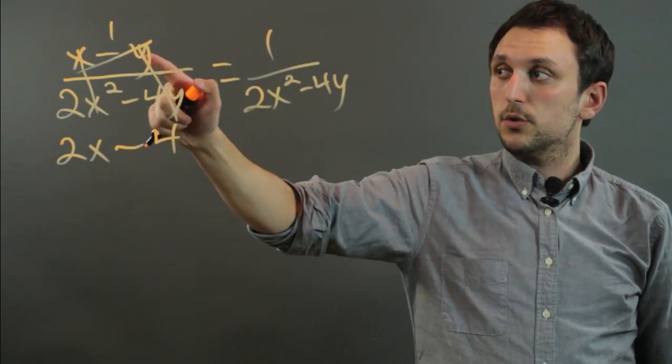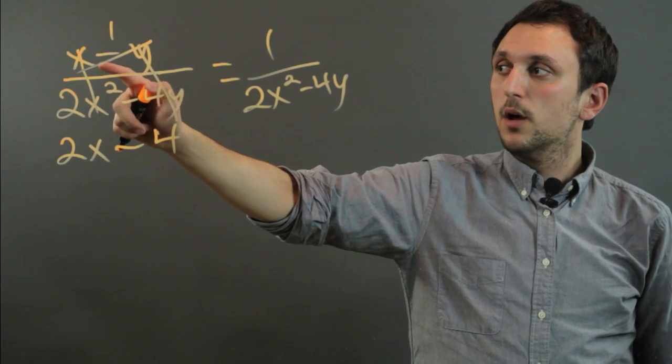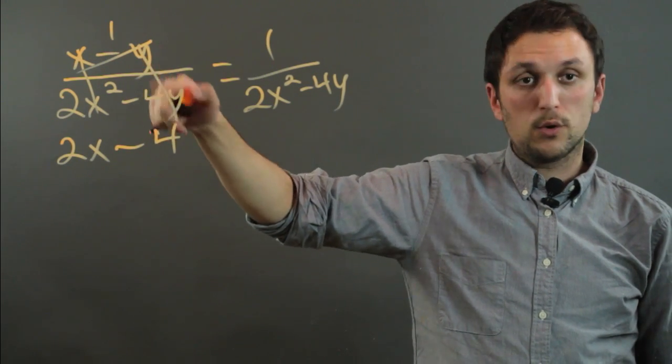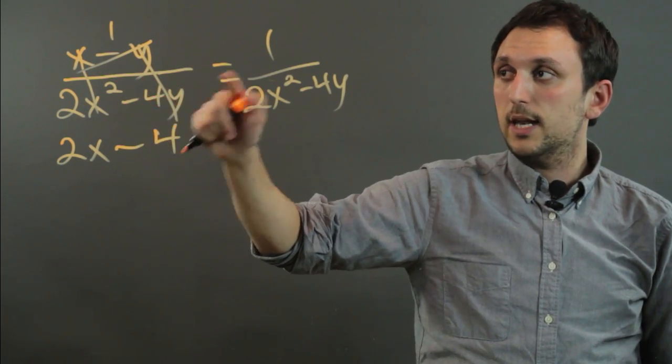So we wouldn't be able to do this if, in a subtraction expression, if one of the terms was not able to be reduced. But because both terms were reducible, then we could simplify it and get rid of the polynomial from the numerator.